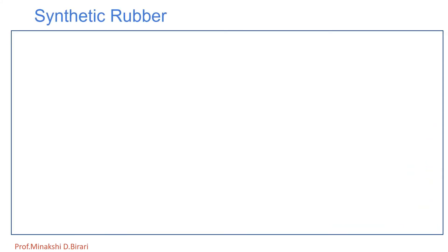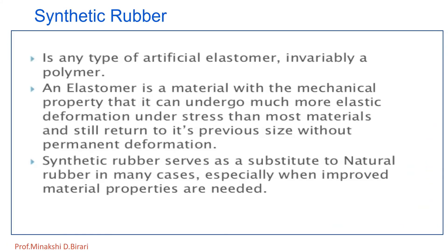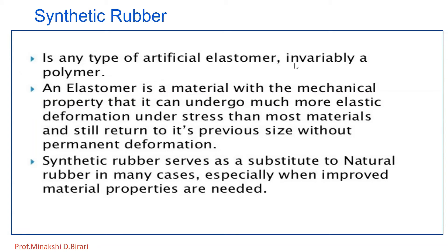Now, synthetic rubber. What is synthetic rubber? It is any type of artificial elastomer — invariably a polymer. An elastomer is a material with the mechanical property that it can undergo much more elastic deformation under stress than most materials and still return to its previous size without permanent deformation.